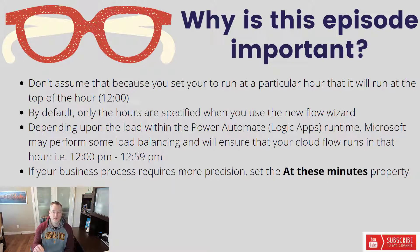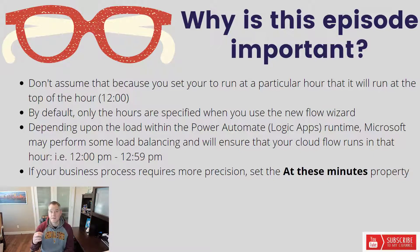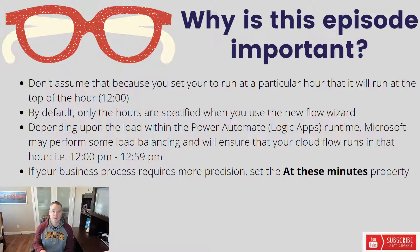The sort of gem within this video is that there's an Advanced Options feature that allows you to specify 'at these minutes.' By default, you're already specifying 'at these hours,' which in this case could mean 12 o'clock. But then you can also say 'at these minutes,' where you could specify zero — so 12:00 on the dot — or 12:10 if you wanted. So if you really need your Cloud Flow to run at 12 o'clock on the dot due to a business need, you need to specify 'at these minutes.'